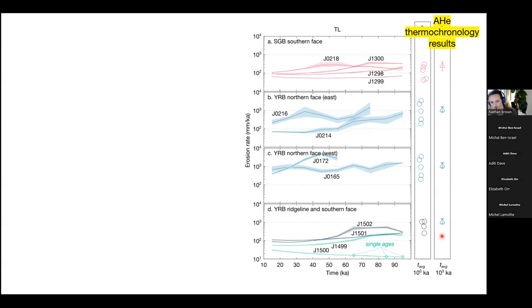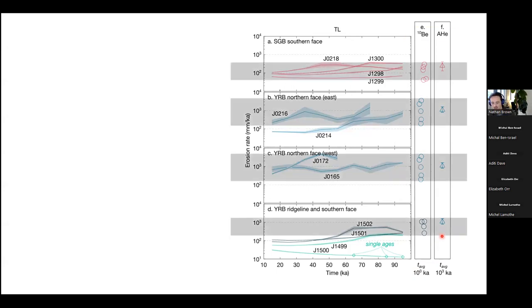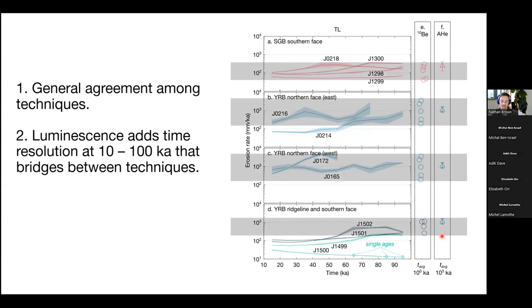And we can also plot up the low temperature thermal chronology results, which have an averaging time scale of millions of years. So one thing that you might immediately wonder is, do these agree with each other? And we were really happy to see that, yes, generally speaking, there is agreement among these three techniques, even though you're looking at very different averaging timescales. So 1,000 years, 10 to 100,000 years, a million years. Broadly speaking, we're getting similar erosion rates, despite that disparity in timescale. So that was an encouraging initial observation.